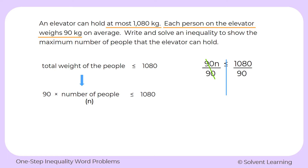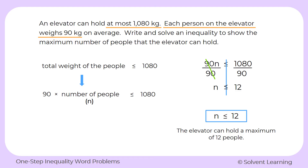We do the same thing on the right side. The 90s cancel out, leaving just n. On the right side, 1,080 divided by 90 leaves us with 12. Bring down the inequality symbol — it stays the same because we divided by a positive number. So our solution is n is less than or equal to 12. Since n represents the number of people, we can say the number of people has to be less than or equal to 12, or the elevator can hold a maximum of 12 people.